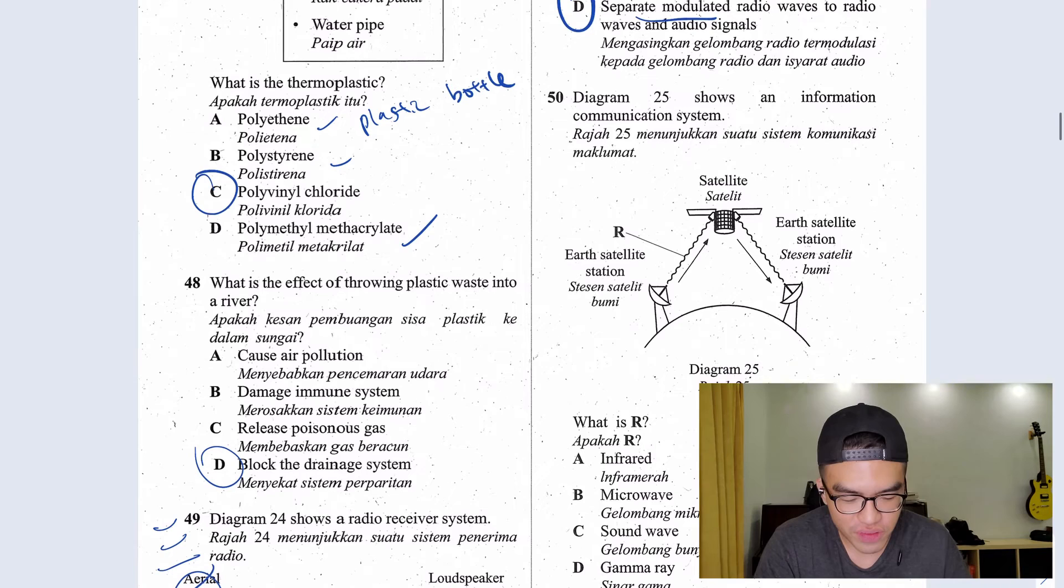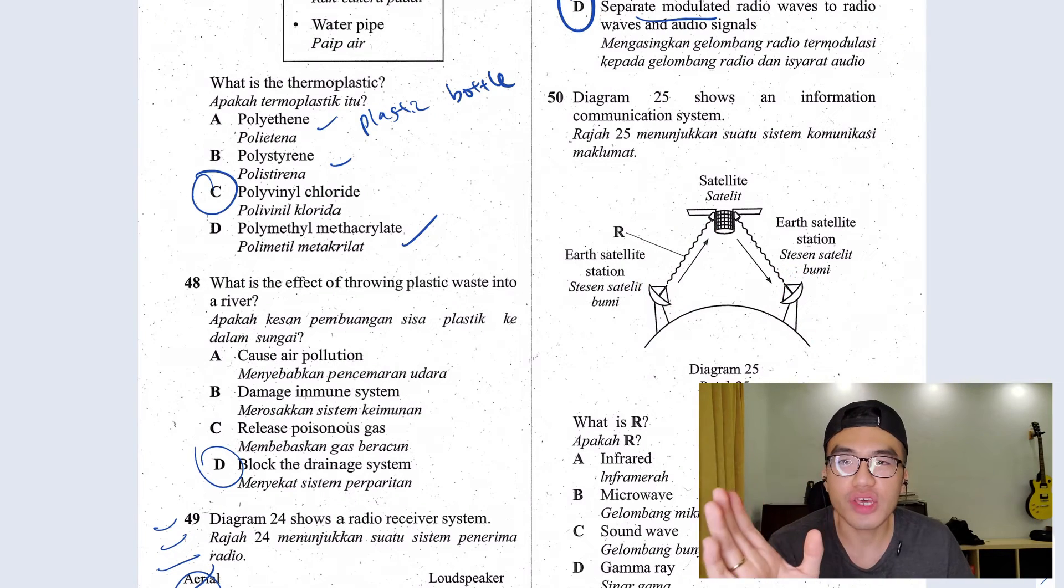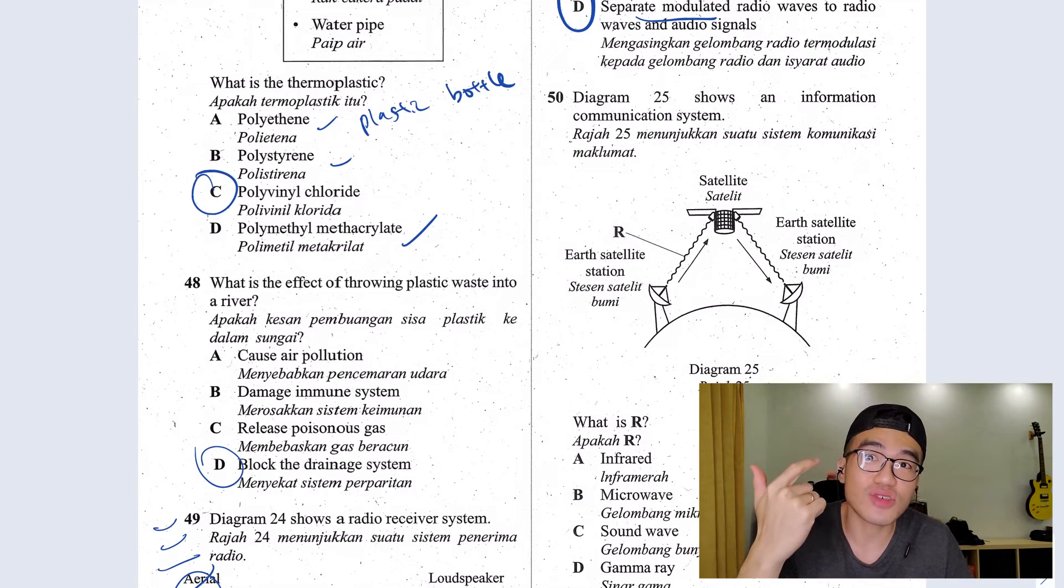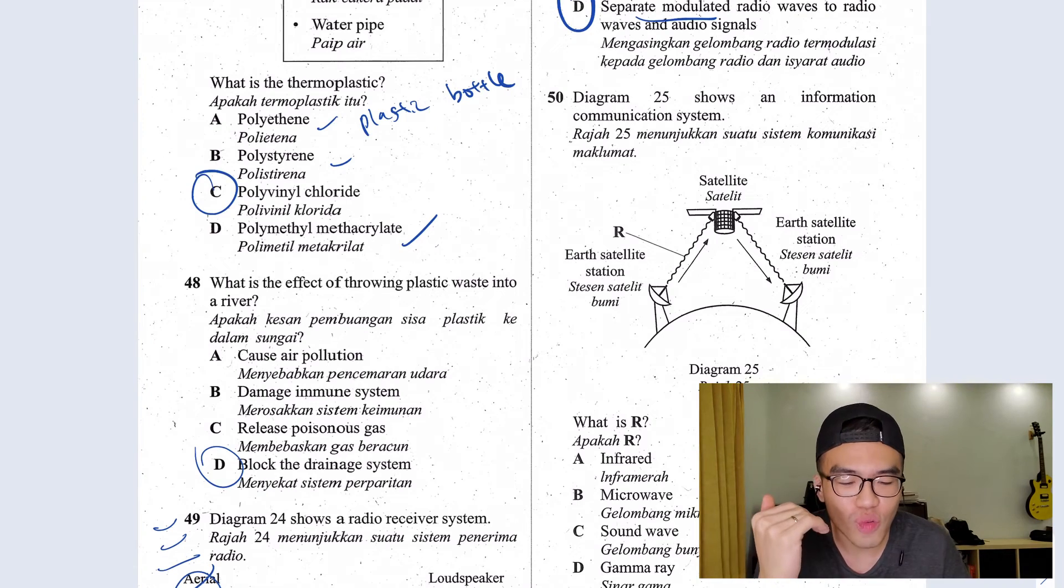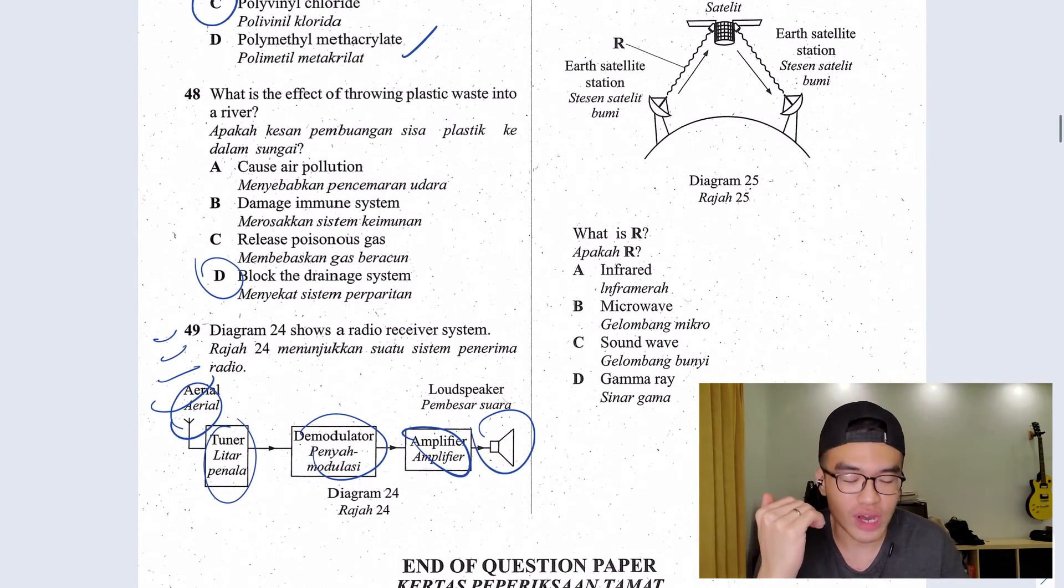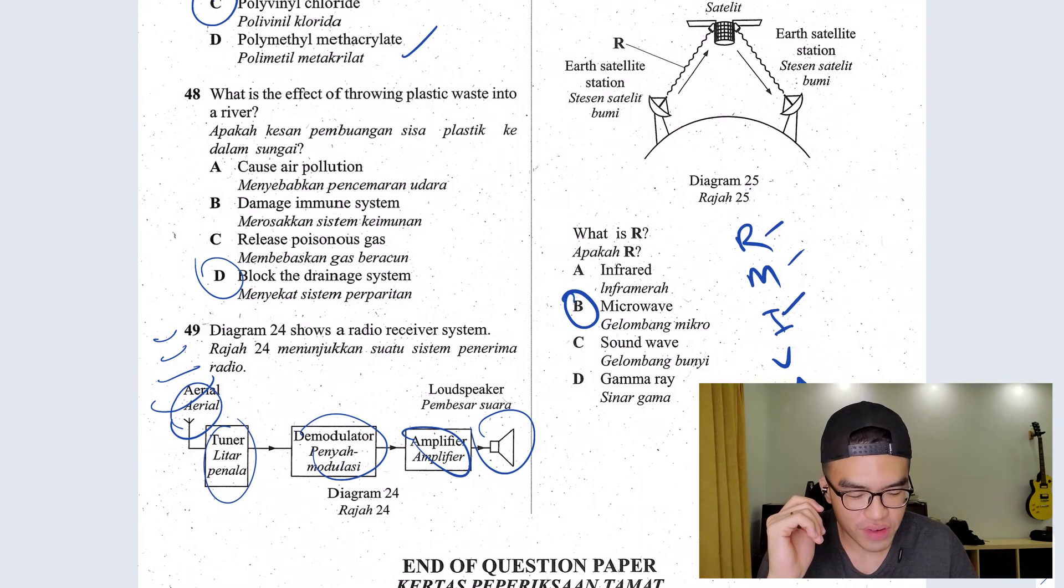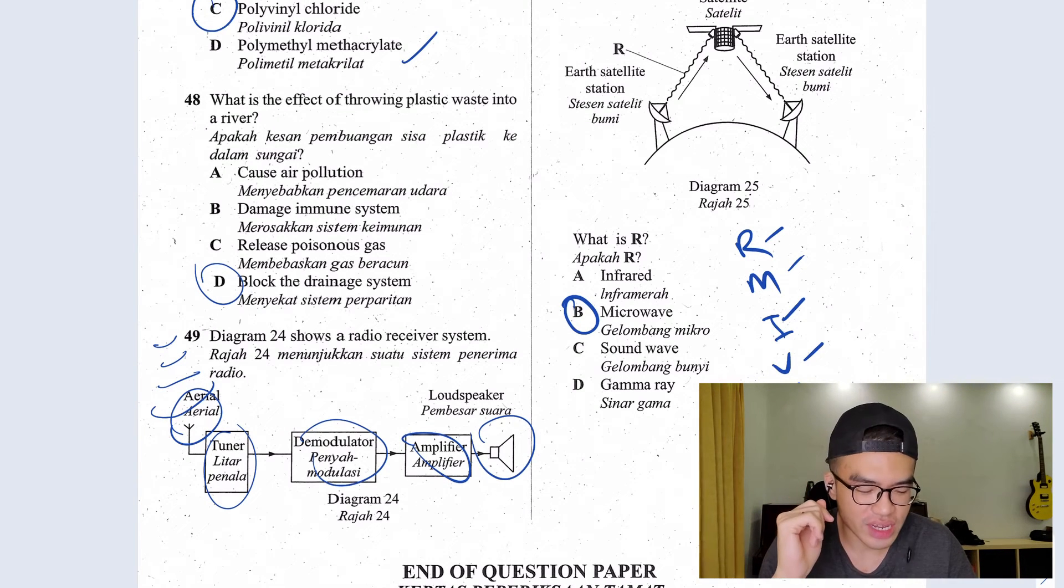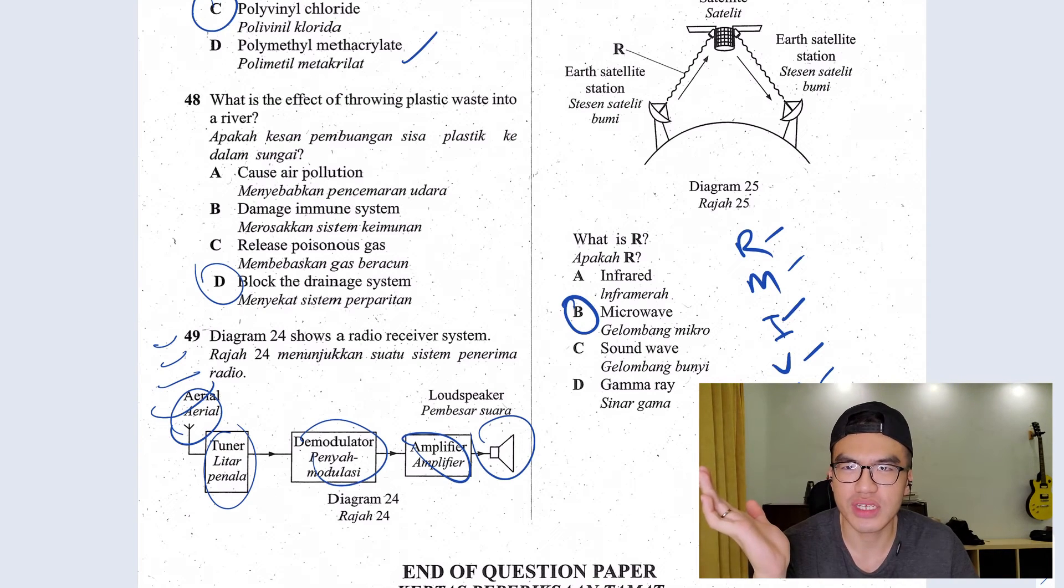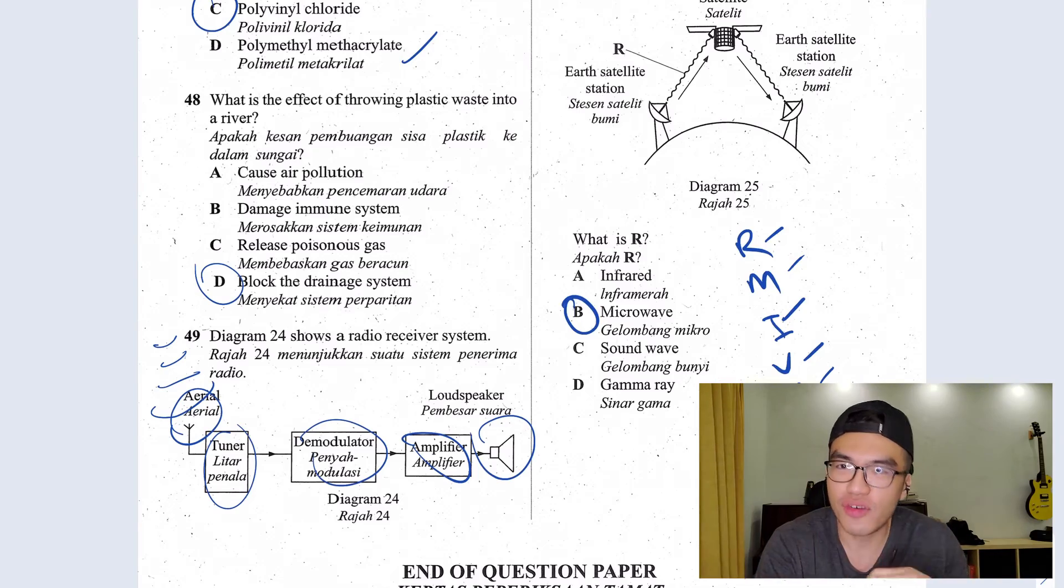Last but not least, question 50. You have a satellite here. You have the Earth satellite station. What is R here? If you are using this for telecommunication, most likely we are using radio wave, but this is going up to the atmosphere. So radio wave is not strong enough. We use something lower than radio wave, which we are going to use microwave. Quick revision, R being radio wave, M being microwave, I being infrared, V being visible light which is the seven colors, U being ultraviolet, the thing you get from the sun that causes you cancer, X being x-ray, G being gamma ray.